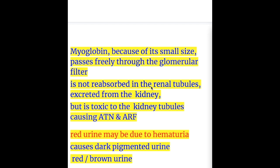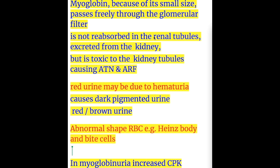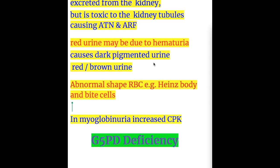Myoglobin is toxic to the kidney tubule, causing acute tubular necrosis (ATN) and acute renal failure. Red urine may be due to hematuria, whereas myoglobinuria causes dark pigmented urine — red to brown urine. In hemoglobinuria there are abnormal shaped RBCs, for example Heinz bodies and bite cells, which occur in G6PD deficiency. In myoglobinuria there is increased creatine kinase enzyme in the circulation.